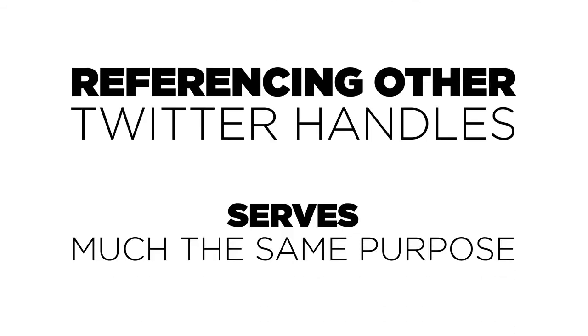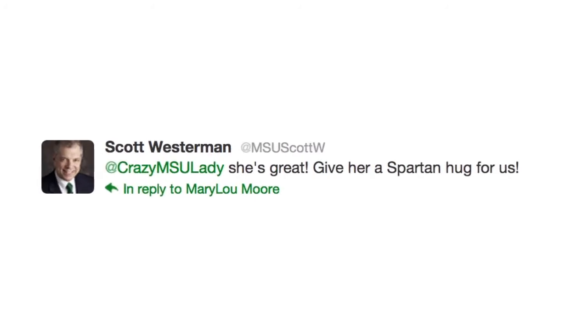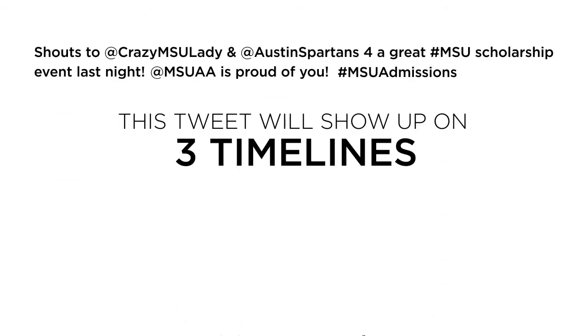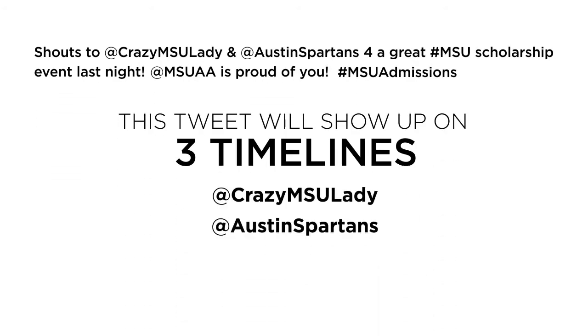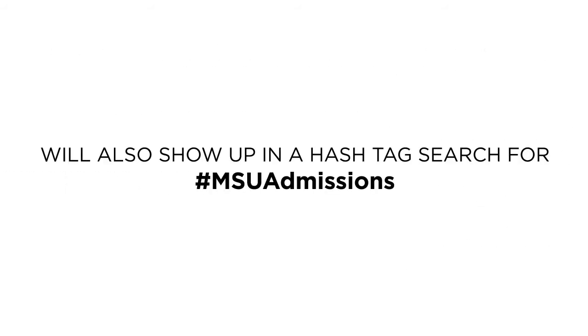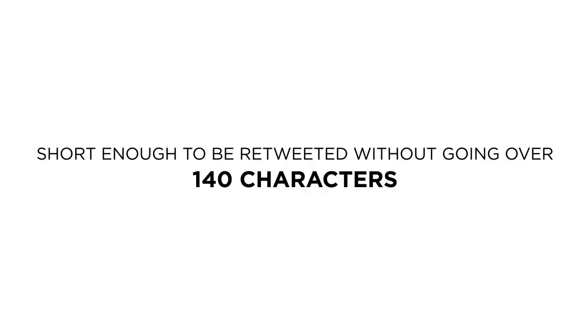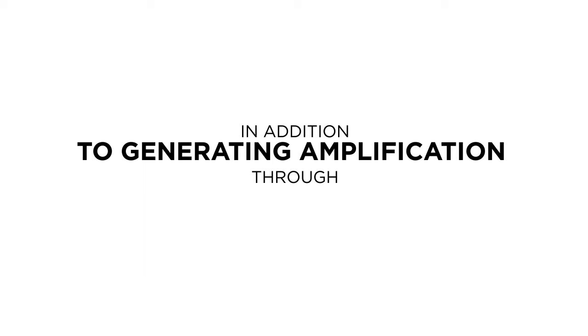Referencing other Twitter handles serves much the same purpose, and it has an additional plus. When you include @crazyMSUlady in a tweet about Mary Lou Moore, the tweet will show up in her mentions tweet stream, too. Here's an example of a tweet that incorporates many of the Twitter tools: 'Shouts to @crazyMSUlady and @AustinSpartans for a great MSU scholarship event last night. MSUAA is proud of you. #MSUadmissions.' This tweet will show up on three timelines — Crazy MSU lady's, the Austin Spartans', and MSUAA's — and in a hashtag search for MSU admissions. And it's short enough to be retweeted without going over 140 characters.